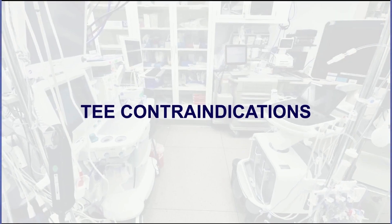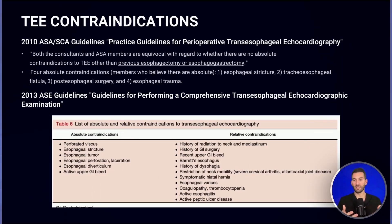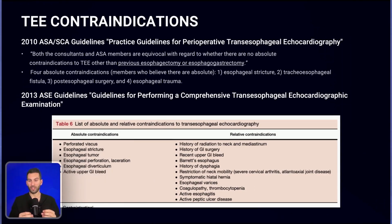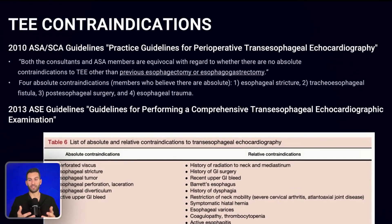One of the main parts of this episode is: what are TEE contraindications? When you look at TEE contraindications, you'll find a lot of variability as far as what are the absolute versus relative contraindications. The two main sources are the 2010 ASA/SCA guidelines and the 2013 ASA guidelines for performing a comprehensive TEE exam. In the 2010 ASA guidelines, members could not agree on whether there were absolute contraindications to TEE, besides esophagectomy.